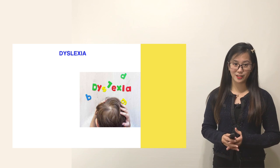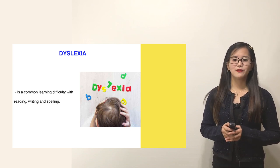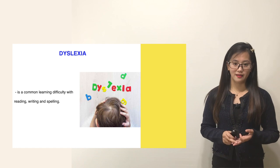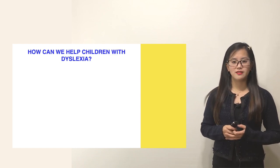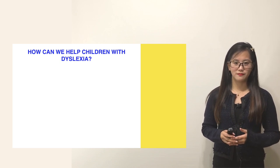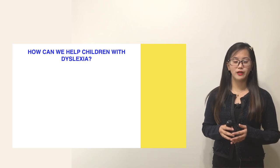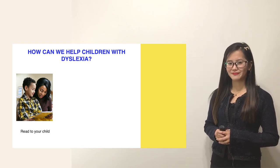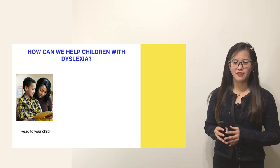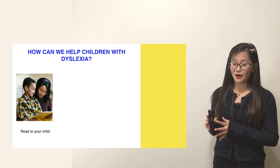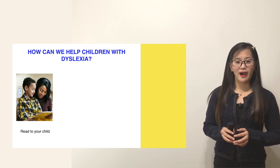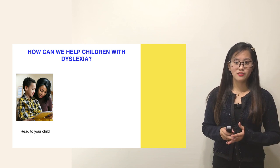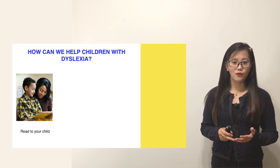Dyslexia is a common learning difficulty with reading, writing, and spelling. So the question is: how can we help children with dyslexia? Parents and teachers can help the child by doing the following. First, we can see in the picture that the mother is reading to the child. We have to read to our children because this will improve their vocabulary and listening skills. Not only that, it will also encourage their interest in books. The more we read to them, the more they become motivated and engaged in reading.